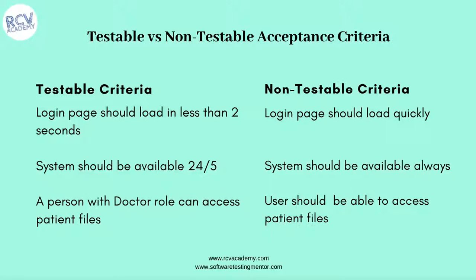Another example: a testable criterion is 'system should be available 24x5,' meaning Monday to Friday, 24 hours a day, the system should be up and running. The non-testable version would be 'system should be available always,' which is ambiguous — it could mean 365 days, 24 hours, 7 days a week. If the business only requires 24x5 availability, you need to get that clarified. Any vague terms like 'always' or 'quickly' that are not well-defined must be questioned.